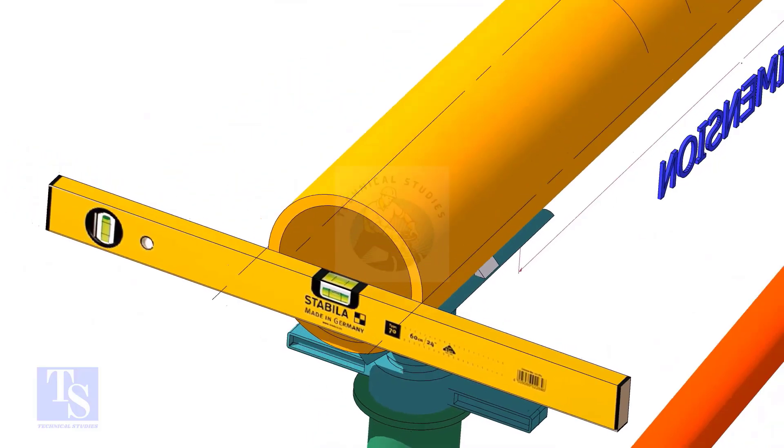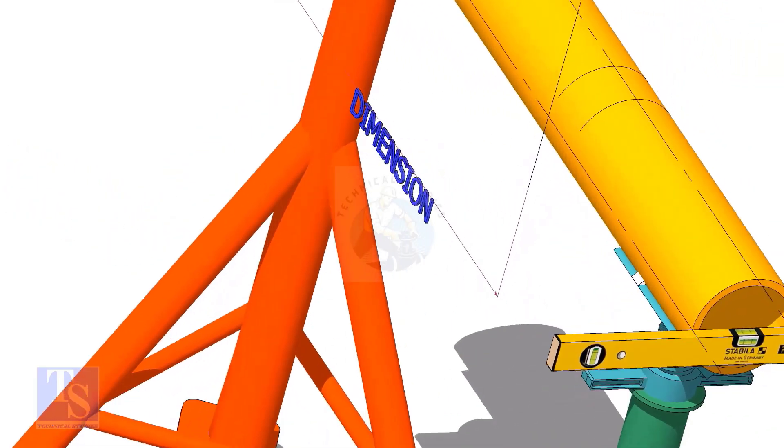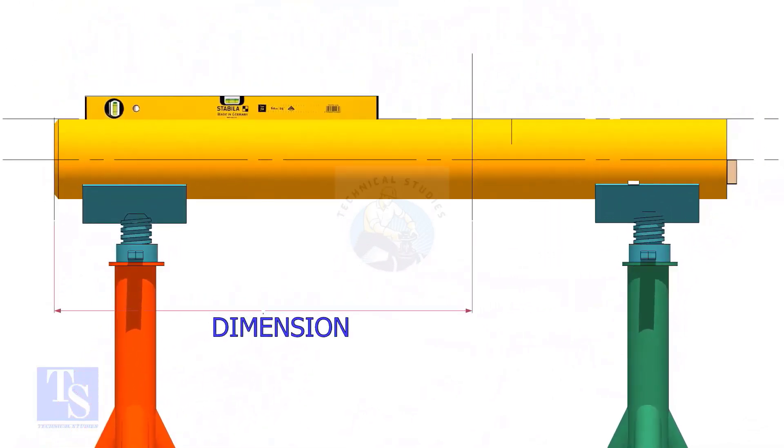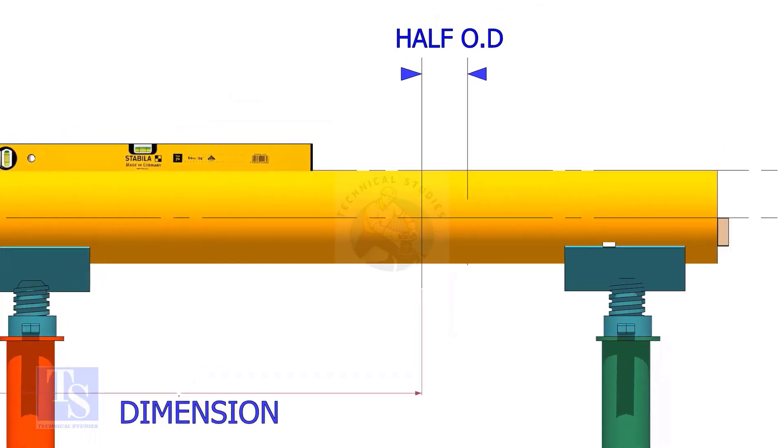Mark the center of the laterolette as per the drawing. Mark half OD of the header in the direction of the laterolette on the top of the pipe. This line is actually for inspection purposes only.